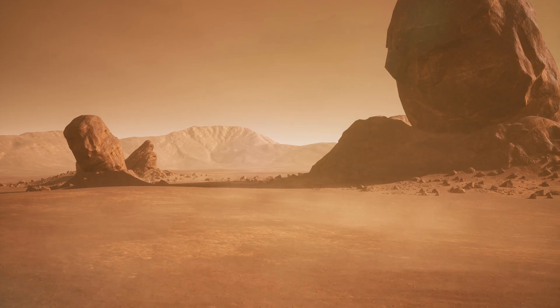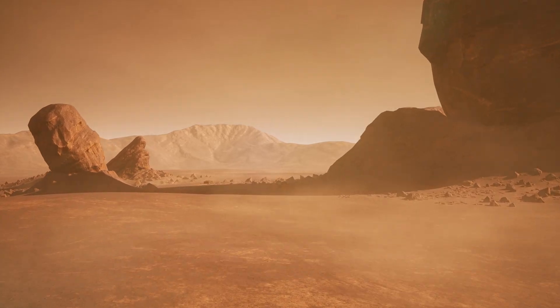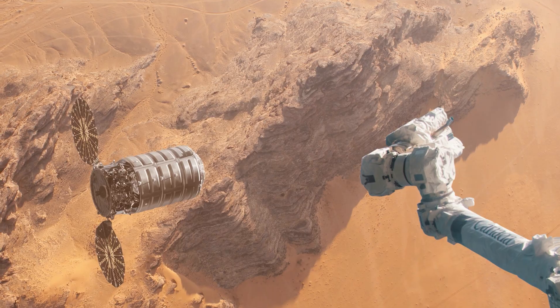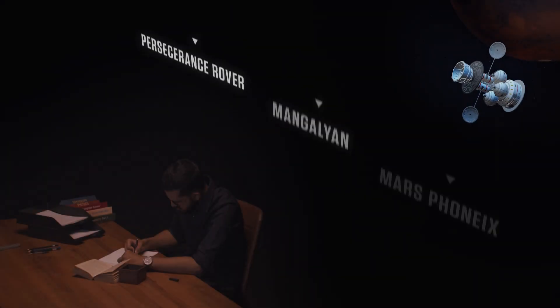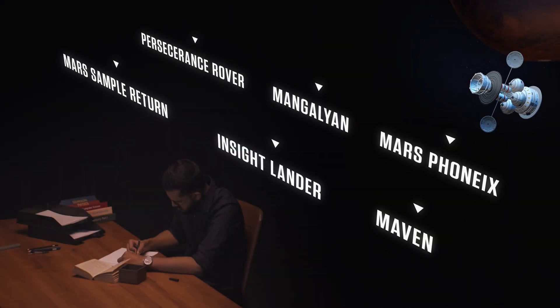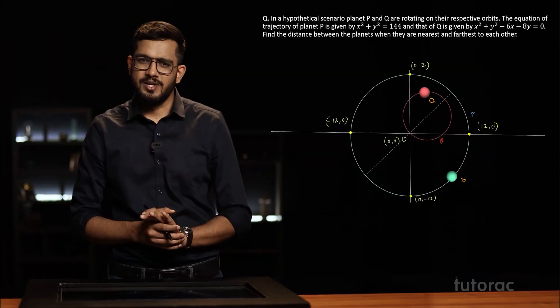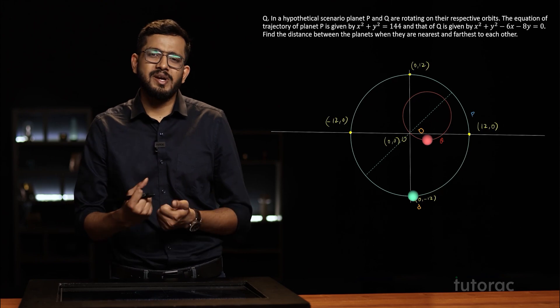The distance between the Earth and Mars is constantly changing. To launch any mission to Mars, astronauts wait for the perfect timing — that is, when the Earth and Mars will be closely aligned to each other. But how are these perfect timings calculated? We'll learn more about it in this course.